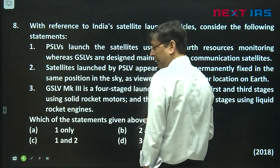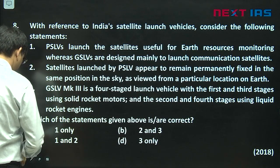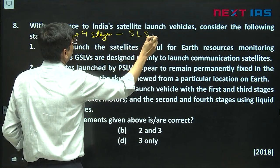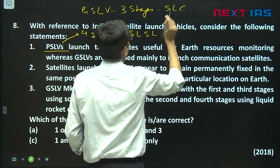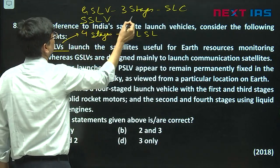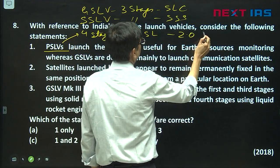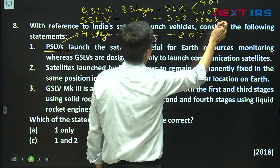This question is about launch vehicles. ISRO has PSLV, GSLV, and SSLV. PSLV has 4 stages: solid, liquid, solid, liquid. GSLV has 3 stages: solid, liquid, cryogenic. SSLV has 3 stages: solid, solid, solid. Payload capacity for GSLV is 4 ton to geostationary orbit and 10 ton to low Earth orbit. PSLV is around 2 ton, and SSLV is 500 kilograms.